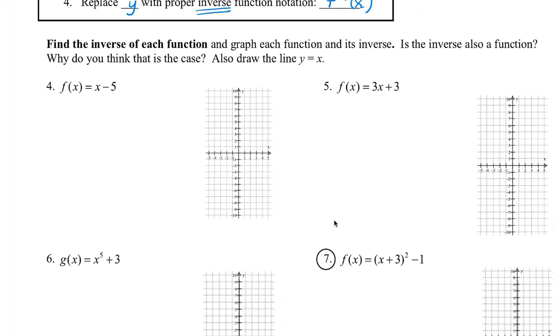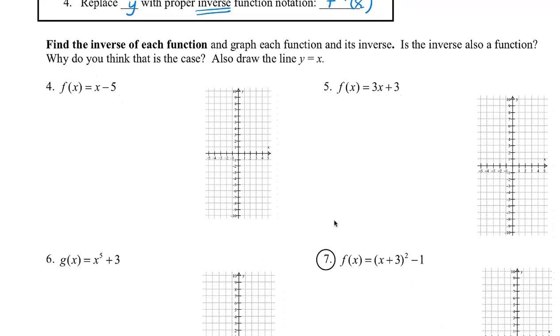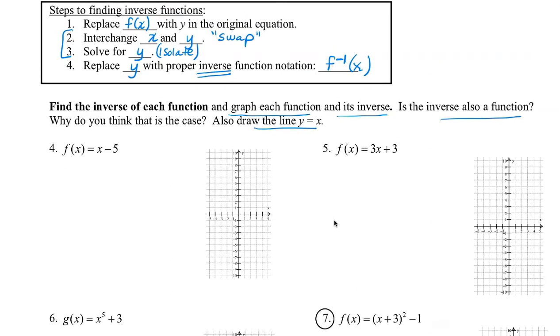Let's look at a couple examples. Find the inverse of each function, graph each function and its inverse. For question number 4, step 1: replace f(x) with y. That just gets rid of that notation. y and f(x) are identical, just different symbols for the same thing. Step 2: we're going to swap or interchange x and y. Wherever there's an x, I'm going to put a y. Wherever there's a y, I'm going to put an x.